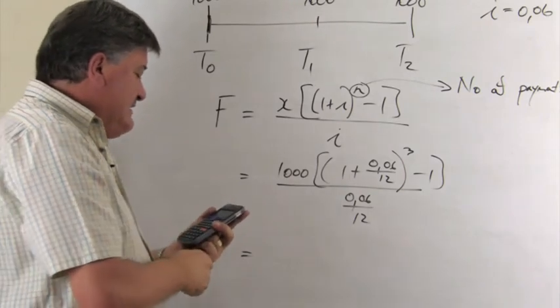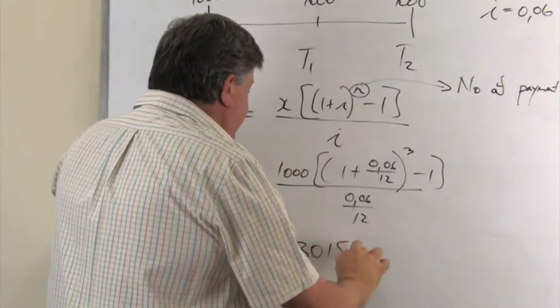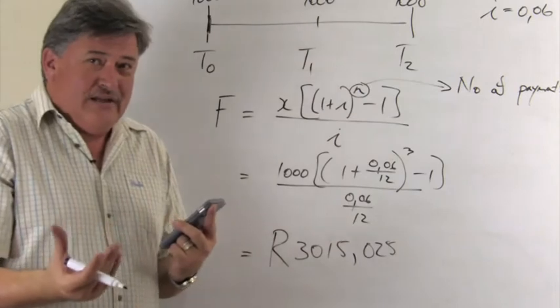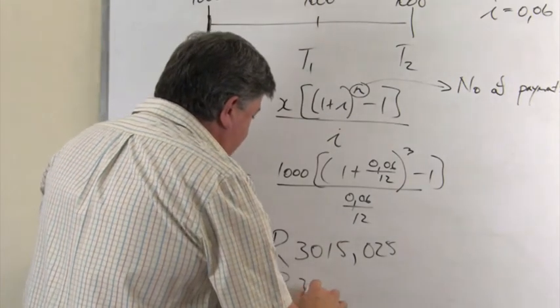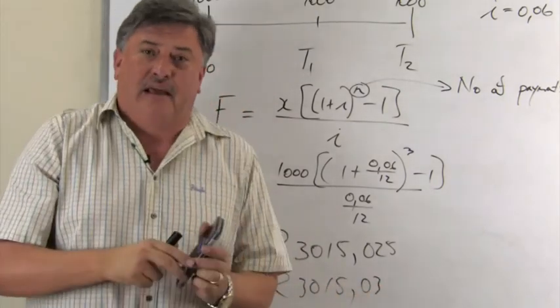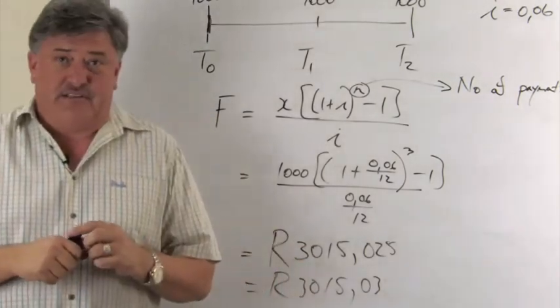And my answer on this calculator is 3015,025. You remember I told you before it was 025. And of course, we round it off to two decimals. And as you can see, the identical answer to when I use the compound interest.